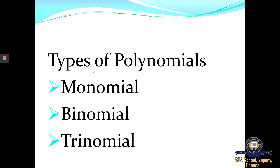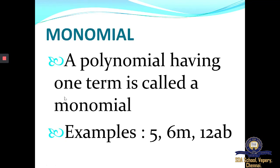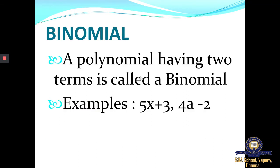We studied about three different types of polynomials: monomial, binomial, and trinomial. A monomial is a polynomial which consists of only one term. Next we studied about binomial — a binomial is a polynomial which consists of two terms, for example 5X plus 3 or 4A minus 2.